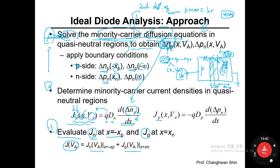These three steps — solving the minority carrier diffusion equation, calculating diffusion current, and evaluating and summing current components — are the main steps in ideal diode analysis. Next week I will explain all the detailed steps one by one. Before watching the next clip, please preview the ideal diode analysis by reading the textbook. Previewing first will make your understanding more robust and solid. That's all for today's lecture. See you next week.